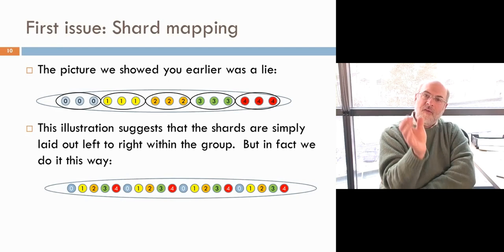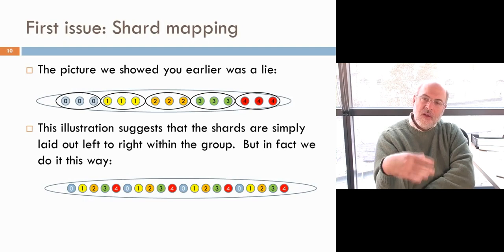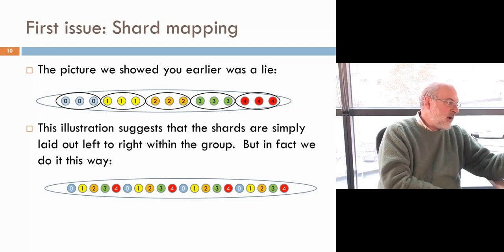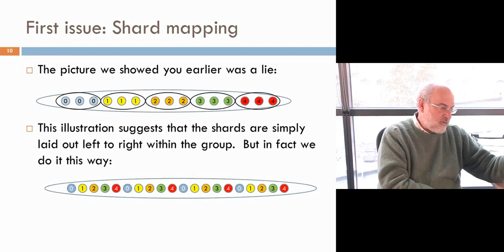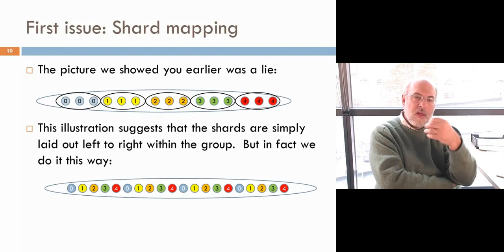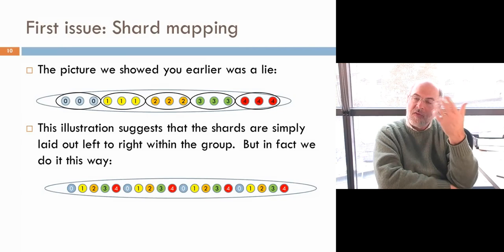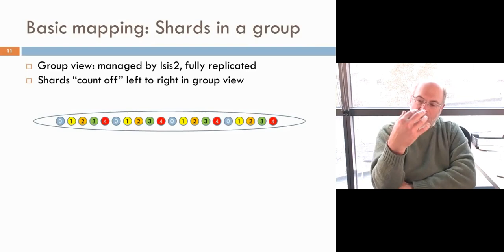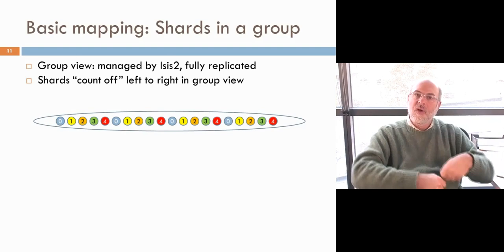The rank in the group tells us which shard the process is in — if your rank is zero, you're in shard zero. With five shards, once we reach rank four, the next node (modulo five) wraps back to shard zero, giving us multiple blue nodes. We calculate how many shards there are from the target values — that's the modulus. With a key, we compute the hash code, take that hash code modulo the number of shards, and we know which shard to put that key into.